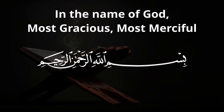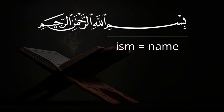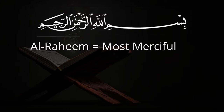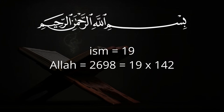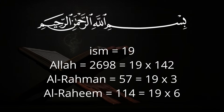Even the opening statement of the Quran, Bismillah ir-Rahman ir-Rahim, consists of 19 letters. In Arabic there are two ways of writing this, and the version in the Quran has exactly 19 letters — unchanged for 1,400 years. It consists of four words: Ism (name), Allah (God), Al-Rahman (most gracious), Al-Rahim (most merciful). Checking a concordance of the Quran: the word Ism occurs 19 times; Allah occurs 2,698 times — 19 times 142; Al-Rahman occurs 114 times — 19 times 6; Al-Rahim occurs 57 times — 19 times 3.